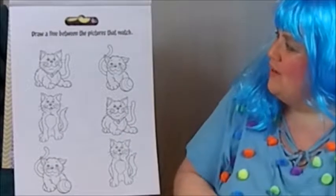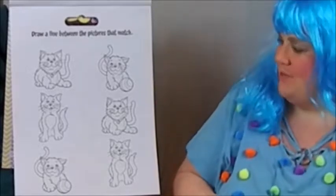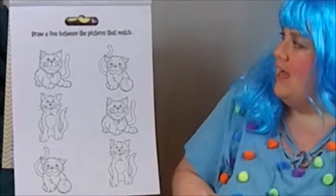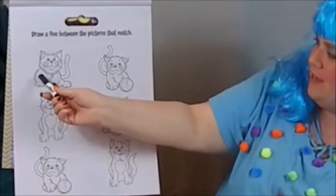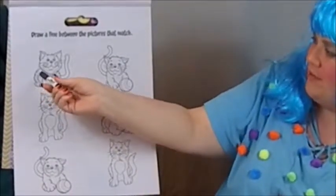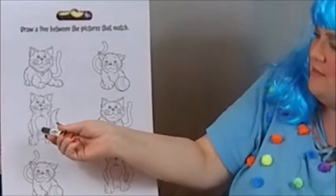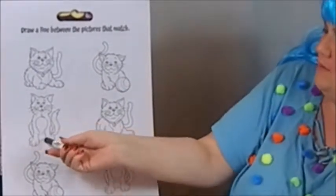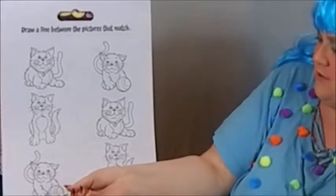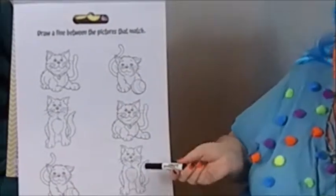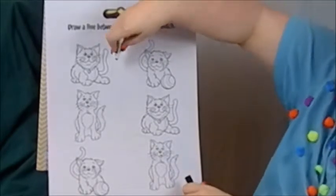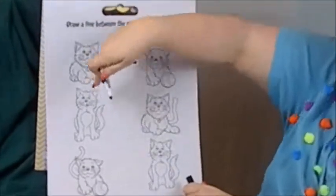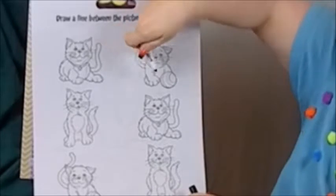We're gonna do a little matching game today. Let's draw a line between the pictures that match. So we have this first kitty here who's kind of laying down, has a little bell collar on. Then this kitty here is kind of just sitting up. And then this kitty down here has a little striped ball. So then we got to find their matching partners on this side. So which one goes with this one over here?